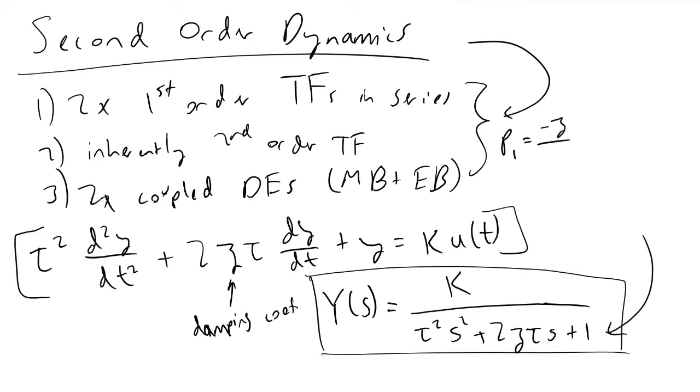Pole one, p1, is equivalent to minus zeta over tau plus square root of zeta squared minus 1 over tau. Pole two is minus zeta over tau minus square root of zeta squared minus 1 over tau.